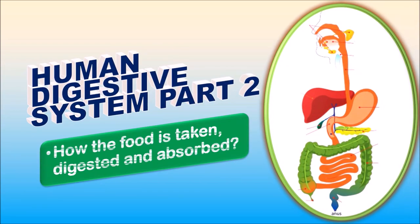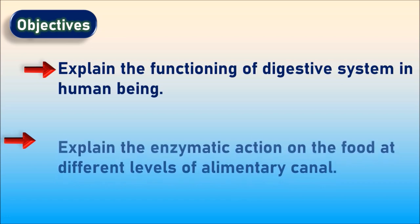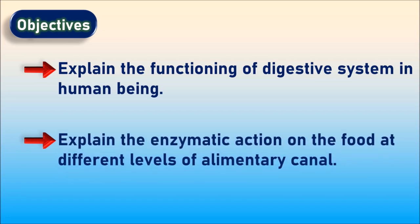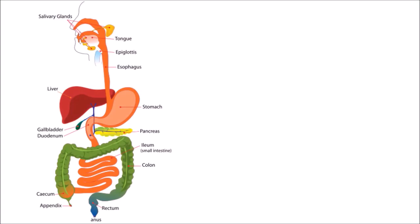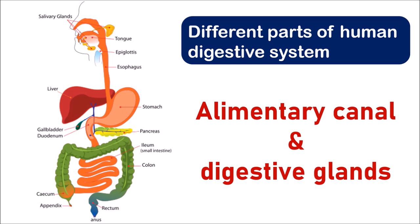Human digestive system part 2: how the food is taken, digested, and absorbed. By the end of this video, you will be able to explain the functioning of the digestive system in human beings, as well as the enzymatic action on food at different levels of the alimentary canal. In the last video, we learned about the different parts of the digestive system, including the alimentary canal and digestive glands.